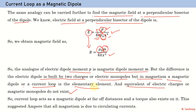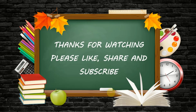So we have seen that the current loop produces a magnetic field and behaves like a magnetic dipole at far-off distances, and a torque exists on it. All magnetic phenomena can be explained in terms of the arrangement of magnetic dipoles or current loops. Ampere suggested that all magnetism is due to circulating currents. Thanks for watching — please like, share, and subscribe.